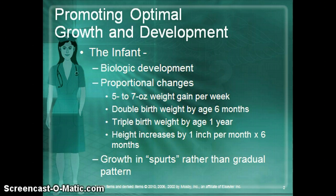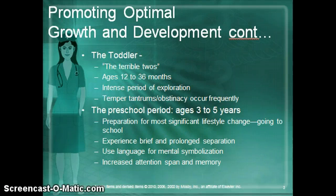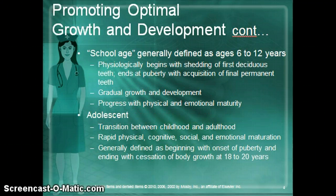As you are reading through your book, things that you need to take note of are areas that concern promoting optimal growth and development. We will be discussing that as far as the infant goes, the toddler, the preschool age child, and then finally the school age child and the adolescent child.